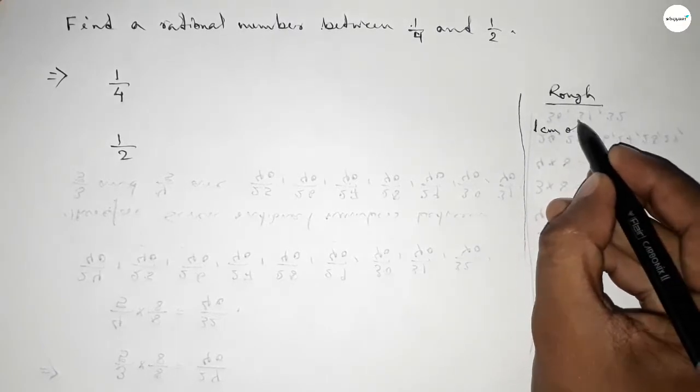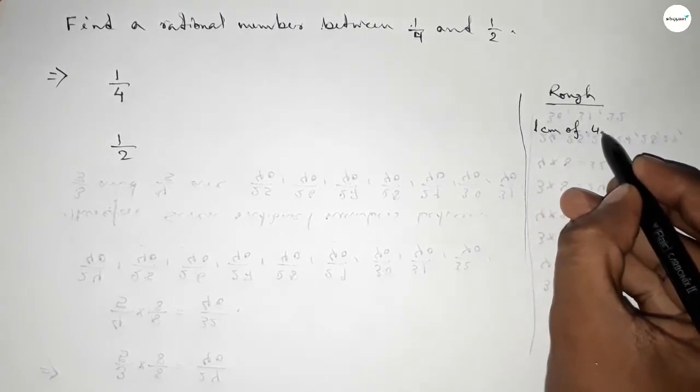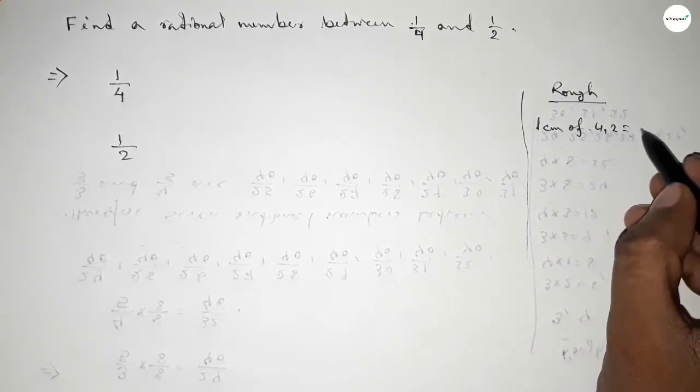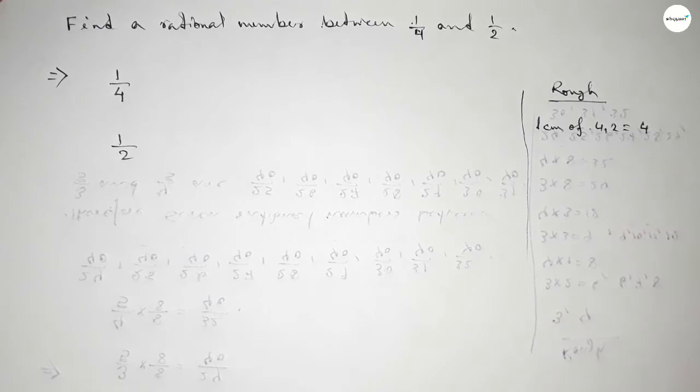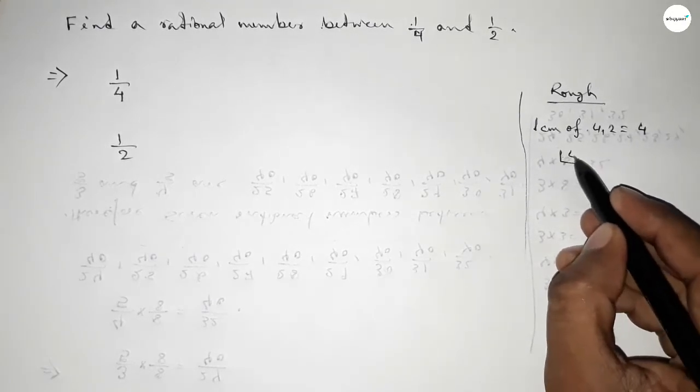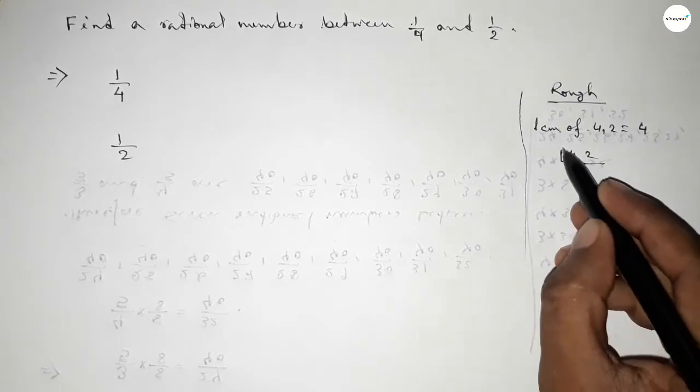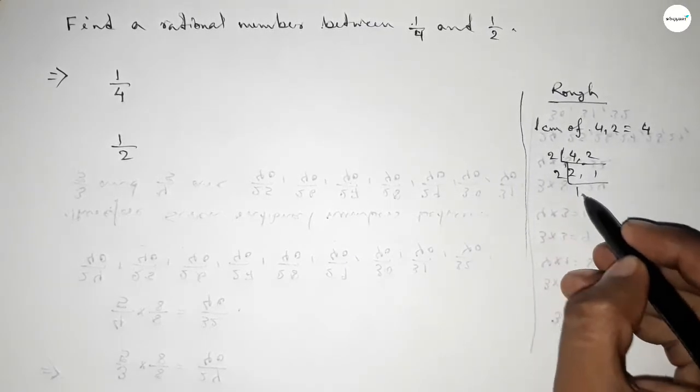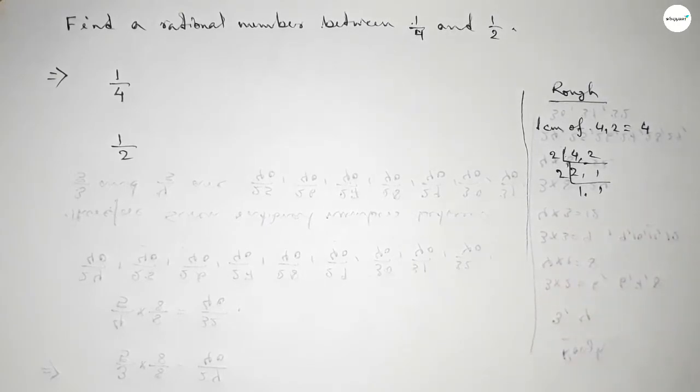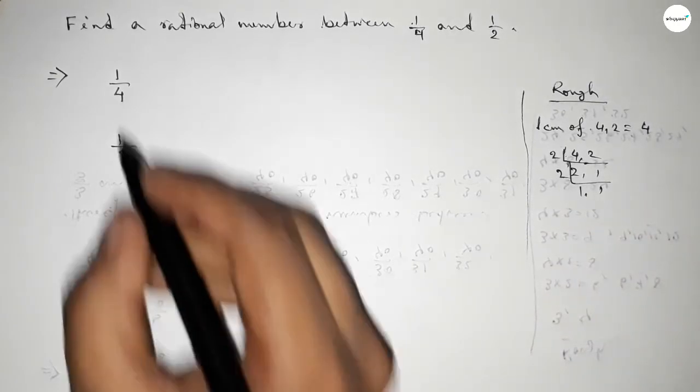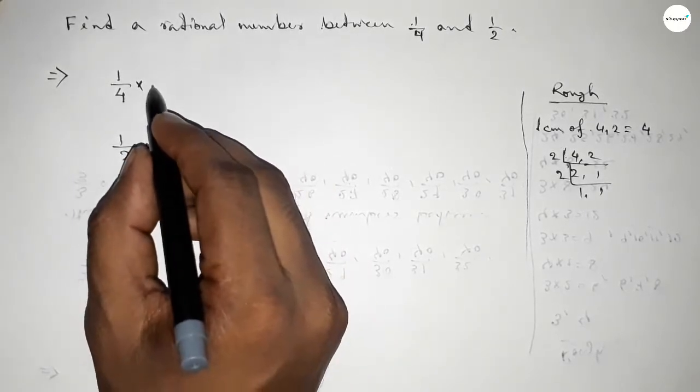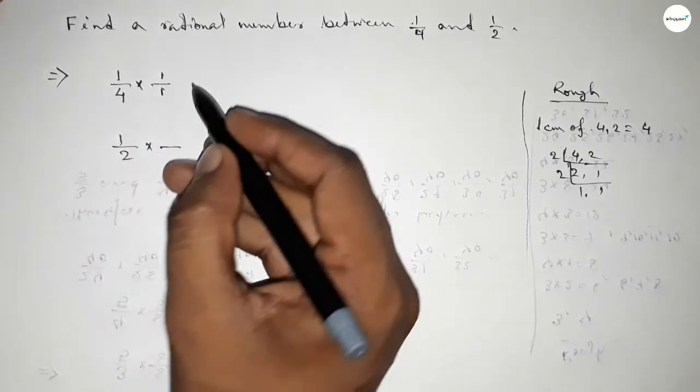So first we have to find out the LCM of 4 comma 2, and their LCM is 4. If you factorize 4 comma 2 here and divide by 2, so this is 2 and this is 1, again divided by 2, so this is 4.